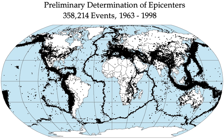Reverse faults, particularly those along convergent plate boundaries, are associated with the most powerful earthquakes—megathrust earthquakes—including almost all of those of magnitude 8 or more. Strike-slip faults, particularly continental transforms, can produce major earthquakes up to about magnitude 8. Earthquakes associated with normal faults are generally less than magnitude 7. For every unit increase in magnitude, there is a roughly 30-fold increase in the energy released. For instance, an earthquake of magnitude 6.0 releases approximately 30 times more energy than a 5.0 magnitude earthquake, and a 7.0 magnitude earthquake releases 900 times more energy than a 5.0 magnitude earthquake.